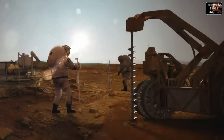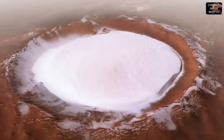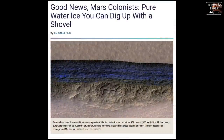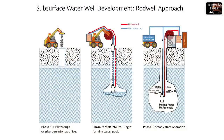Mining the ice might prove trickier than people think. The most efficient way would be using machinery such as drilling rigs, but this machinery would have to be powered by high-voltage electricity and suited to Martian surface conditions. Since the visible surface ice is at the poles and the colony likely would not be, they could wind up having to dig down hoping to hit a pocket of solid ice.